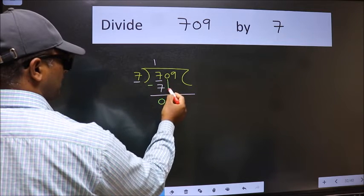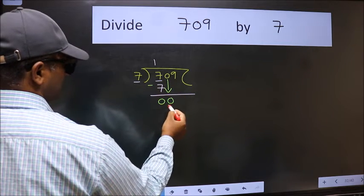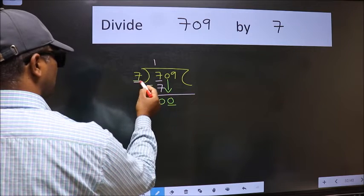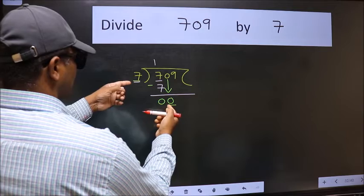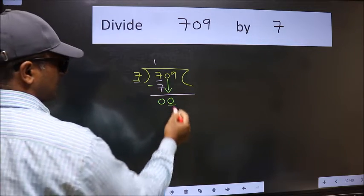After this, bring down the number beside it. So bring 0 down. Now we have 0 here and 7 here. 0 is smaller than 7, so we should bring down the second number.